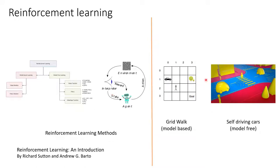For example, imagine there's a grid walk problem with state transition probabilities for all states and actions given. The agent can be trained using dynamic programming-based algorithms like value iteration or policy iteration to reach the final goal in fewer steps. But real-world problems are not so simple. Calculating the probability of a state transition is almost impossible — for example, the probability of moving left when you steer the wheel of your car to the left is completely unpredictable. So most real-world problems can be solved only using model-free methods.